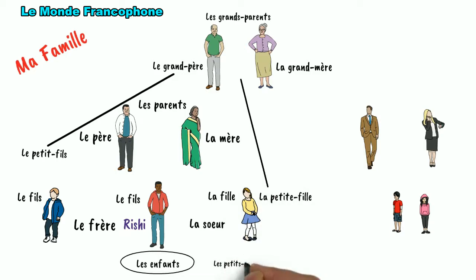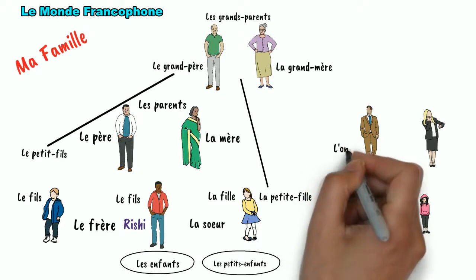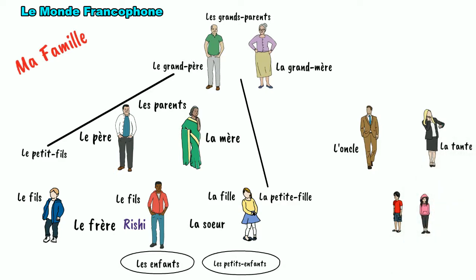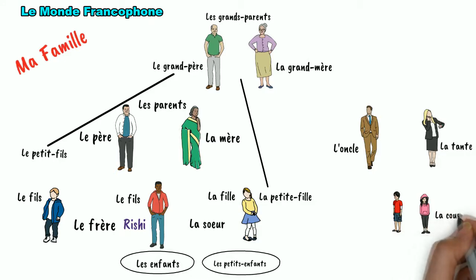Rishi also has an uncle and an aunt and two cousins — a cousin brother and a cousin sister. So uncle in French is l'oncle. Uncle's wife is called aunt. Aunt is la tante. Now this uncle and aunt have two children. The daughter is Rishi's cousin sister. Cousin sister in French is la cousin. And cousin brother is le cousin. So this is the whole family tree.